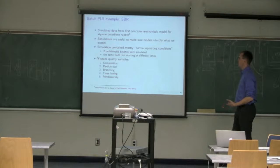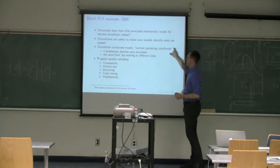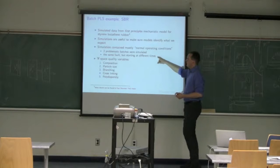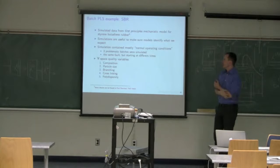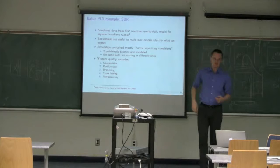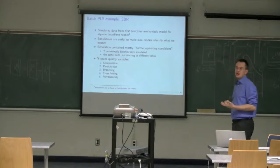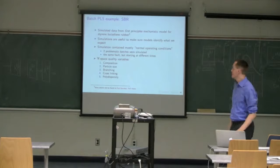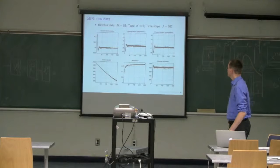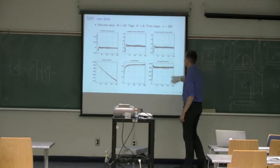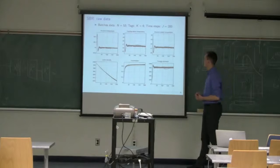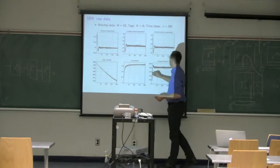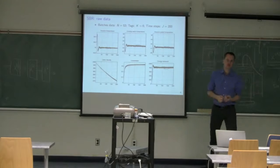What's nice about the simulation is that it helps you verify things you're trying out. Paul simulated some good batches and then two bad batches. Both bad batches had the same problem, but the problem showed up at different points in time. There are five Y variables. The simulation allows us to check whether batch monitoring actually works, because we know which batches we should be picking up. So: 53 batches, six variables in the trajectories, at 200 time steps. No need to align here as the data are simulated, and the trajectories are very close together with very little noise.